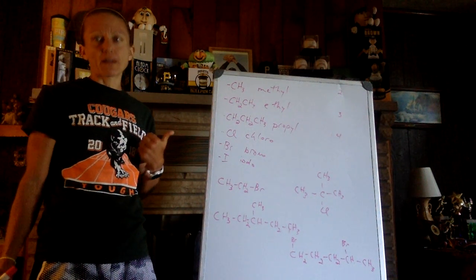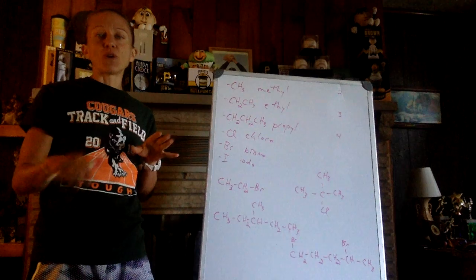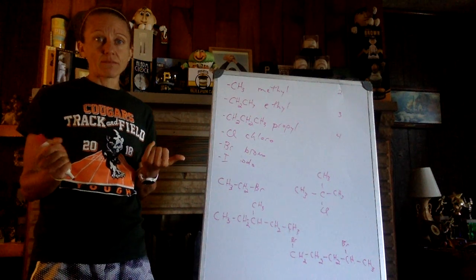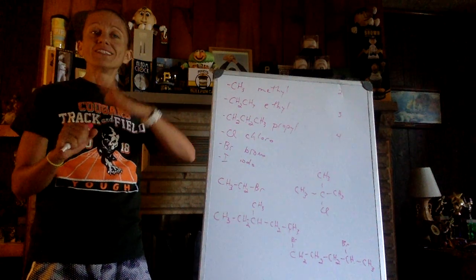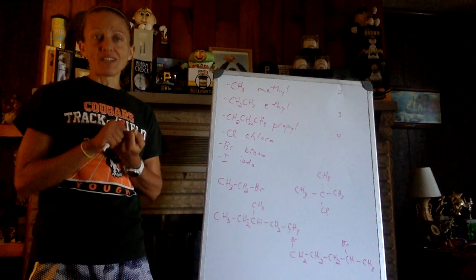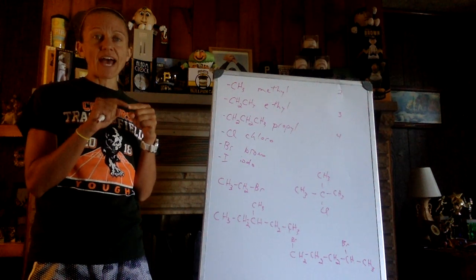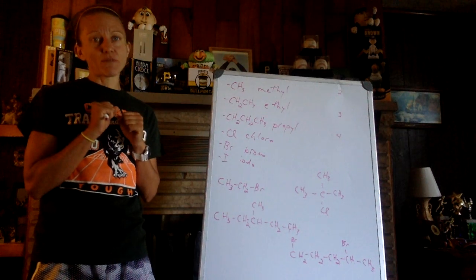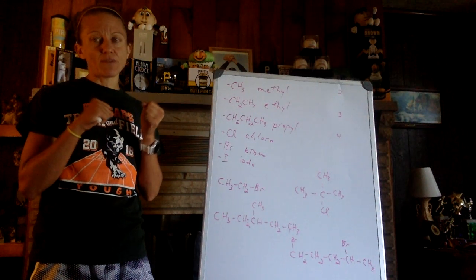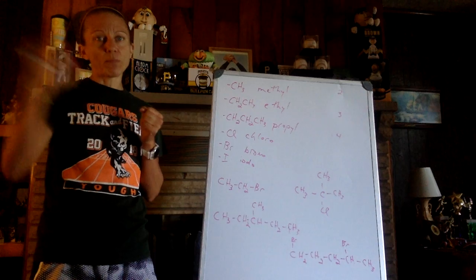Check out the pictures below that in your packet. In your first one, you have a five-carbon chain, so pentane. A methyl group on your second carbon from the left. Two-dash, that's the carbon it's on. Methyl is the name of the group. Pentane is the name of the chain. 2-methylpentane.